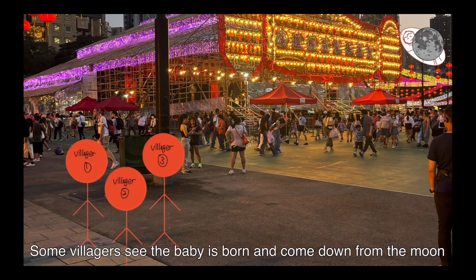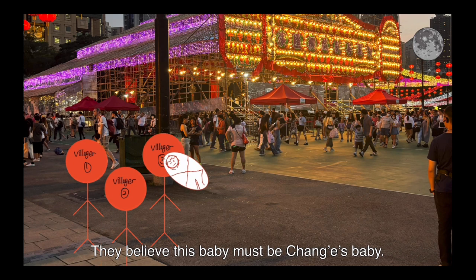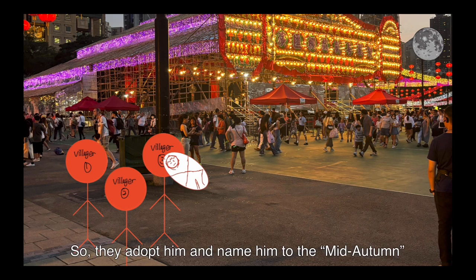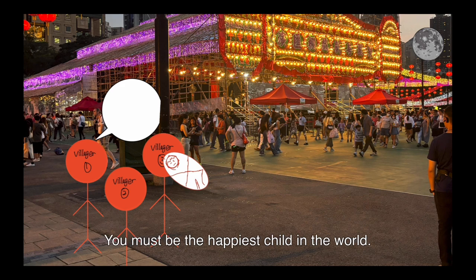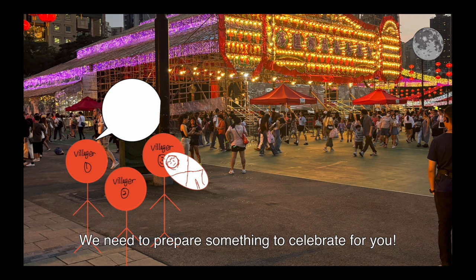Some religious see the baby is born and come down from the moon. They believe this baby must be Chang'e's baby, so they adopt him and name him to the Mid-Autumn. And the religious just say, you are the baby of Chang'e. You must have the moon's blessing. You must be the happiest child in the world. We need to prepare something to celebrate for you.